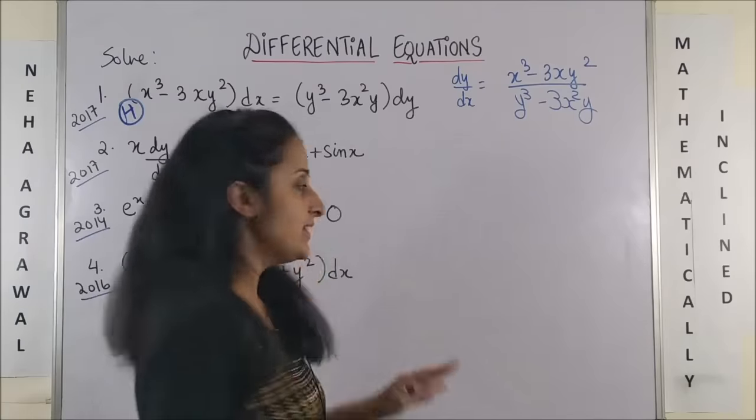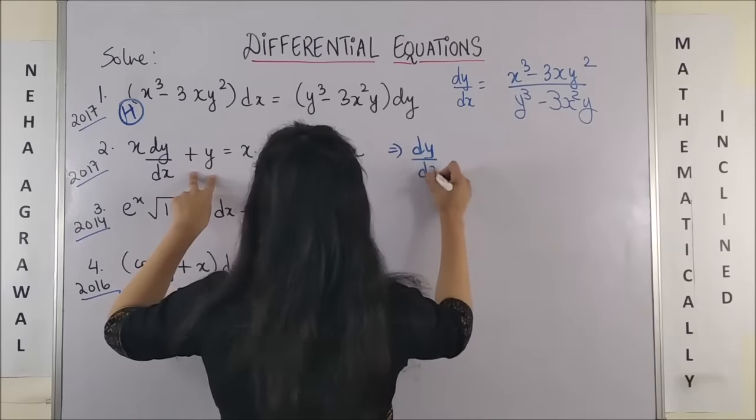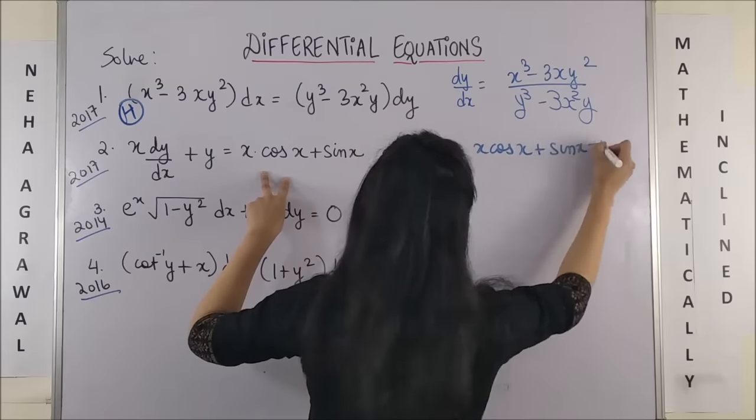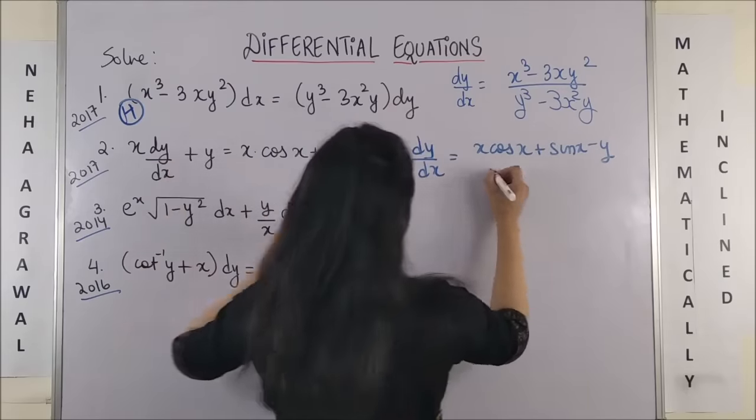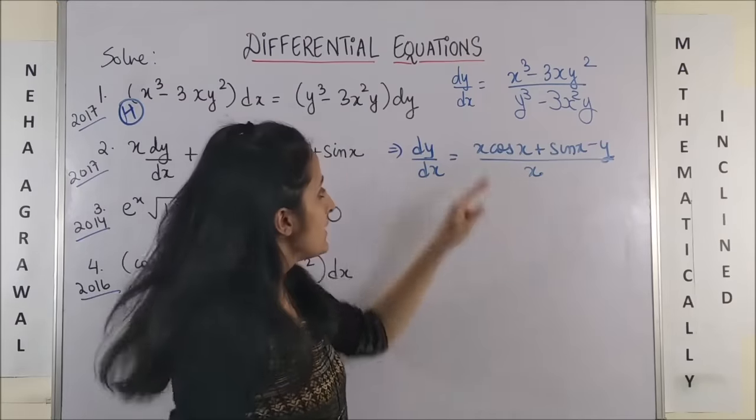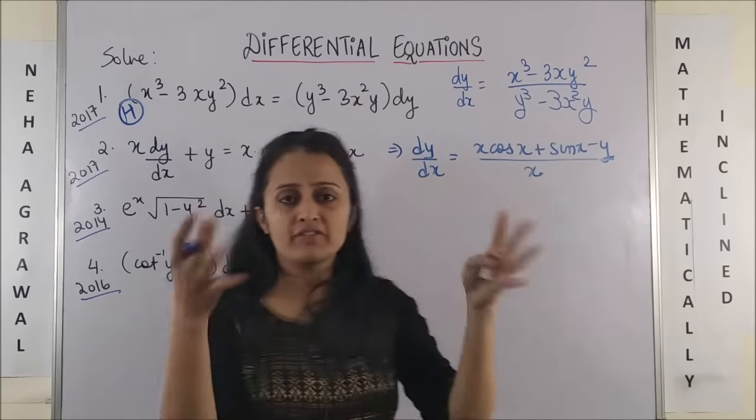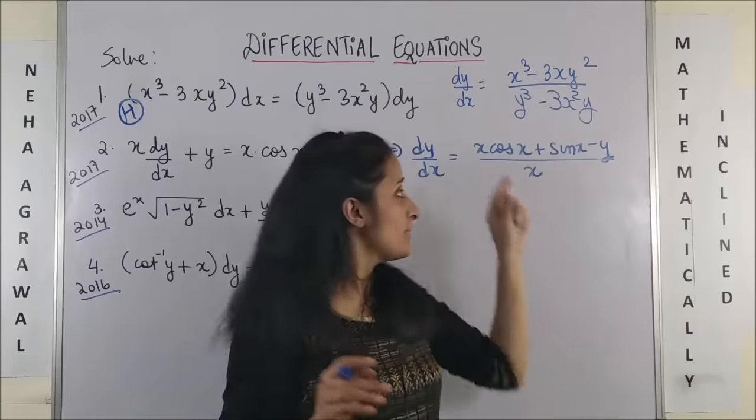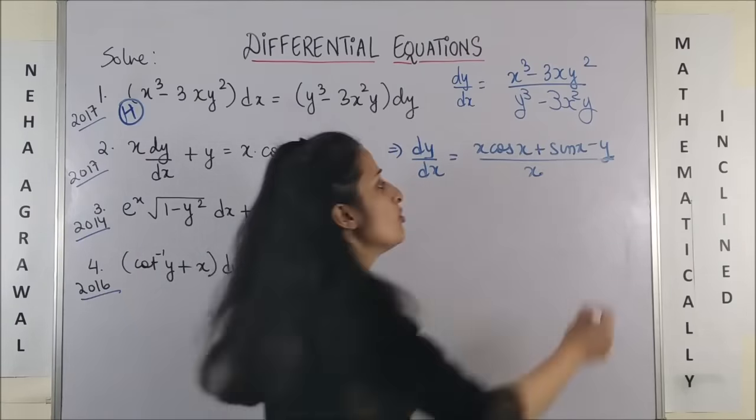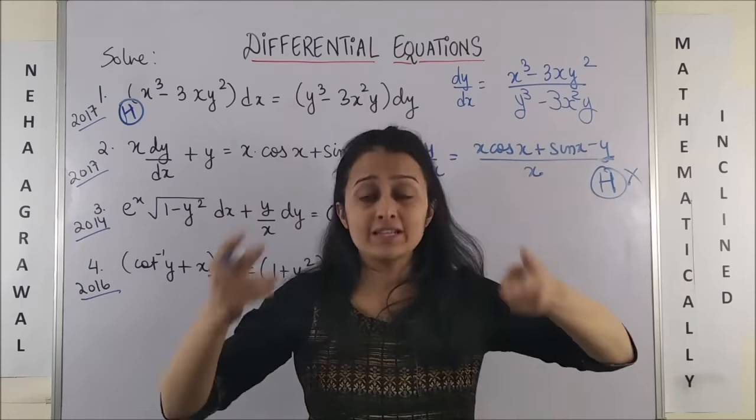Next one. Again we have to write dy by dx. So, this will be dy by dx is x cos x plus sin x minus y, upon x. Now, this is x cos x, sin x, y by x. All of them are varied degrees, right? So, all their degrees are different. It cannot be homogeneous. So, homogeneous differential equation is out of question. Moving next.